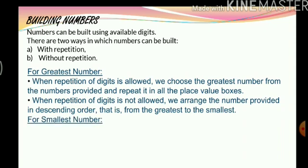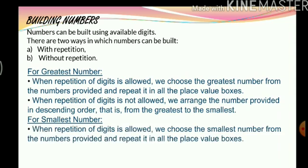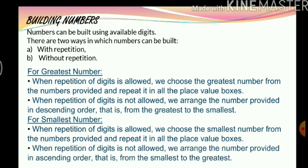For the smallest number, when repetition of digits is allowed, we choose the smallest digit and repeat it in all the place value boxes — just the opposite of what we do for the greatest number. And when repetition of digits is not allowed, we arrange the numbers in ascending order, that is from the smallest to the greatest.